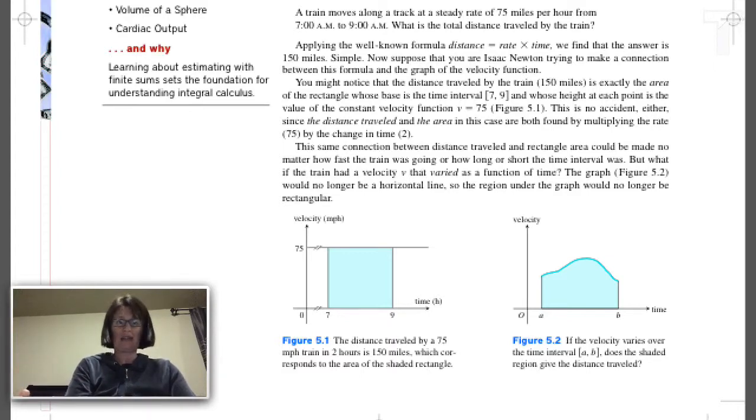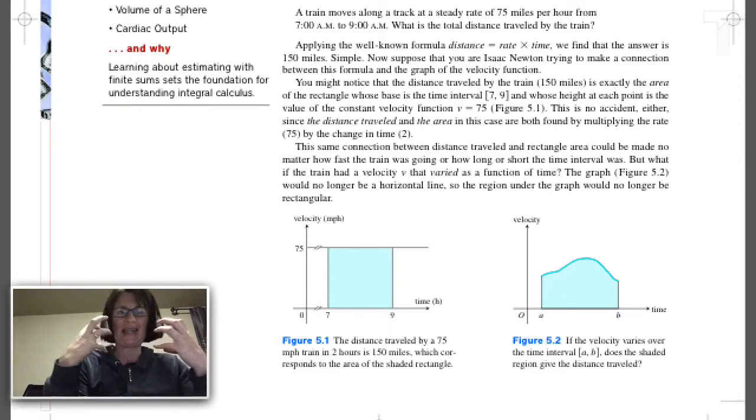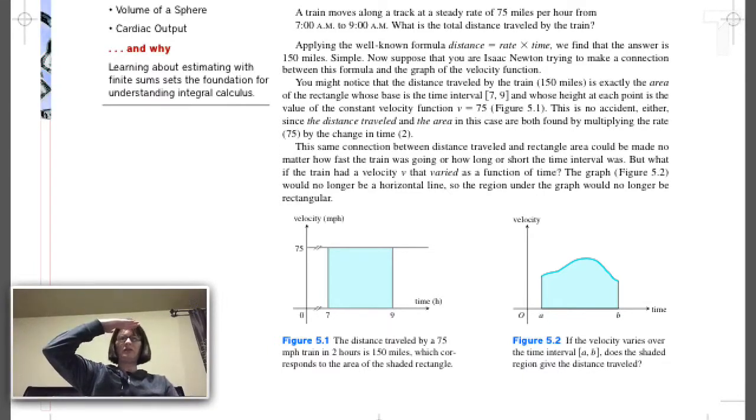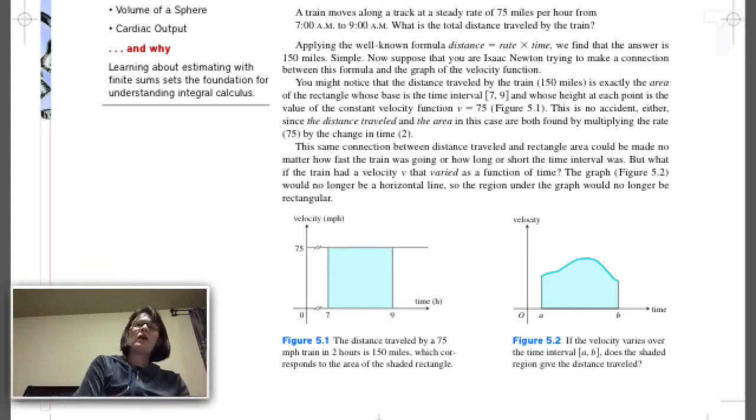And so the founders of calculus surmised that and then came to understand that they were correct. That here, this is the picture on the left, the area under the function 75, the velocity, between 7 and 9, if you found the area of that shaded blue region, that gives 150 miles. Well, what if my velocity wasn't constant? Is the area under the velocity curve still equal to distance traveled? It turns out it is.